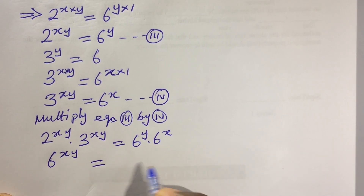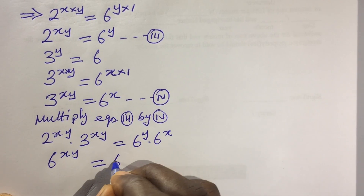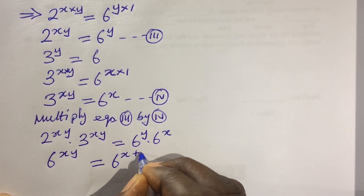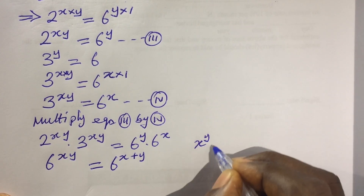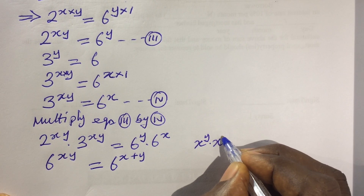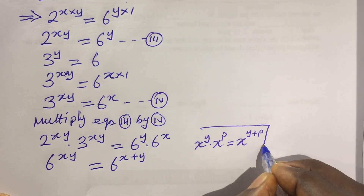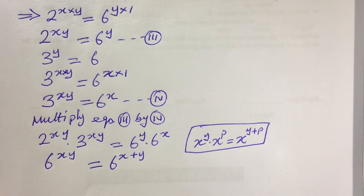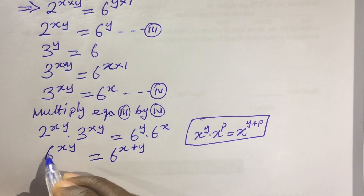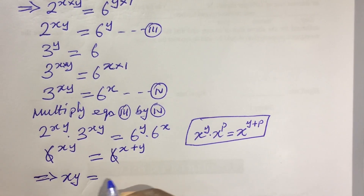On the right-hand side the bases are the same — both are 6 — so by the law of indices we add the exponents: 6 to the power of x plus y. The law of indices states that x to the power of y times x to the power of p equals x to the power of y plus p. Applying this, the right-hand side becomes 6 to the power of x plus y. Since the bases are equal, we can cancel them and equate the exponents, giving us xy equals x plus y.